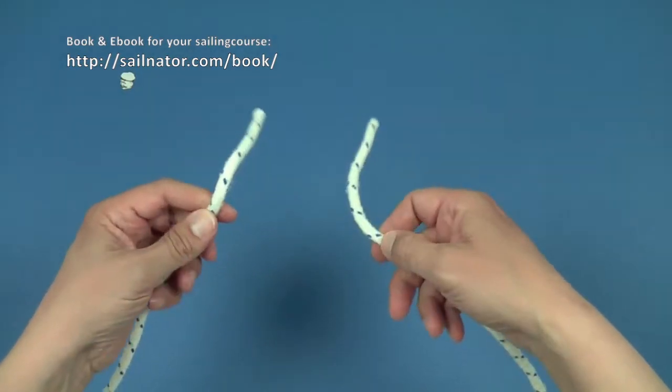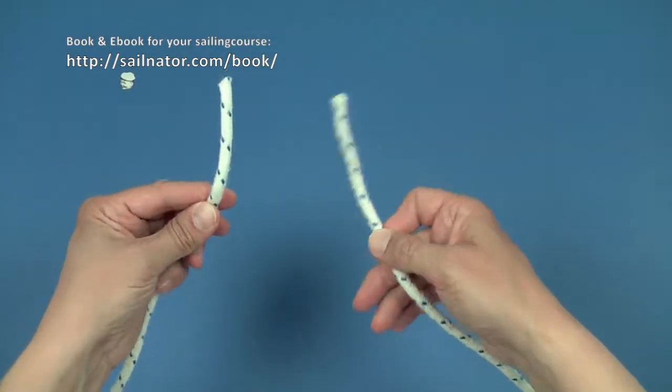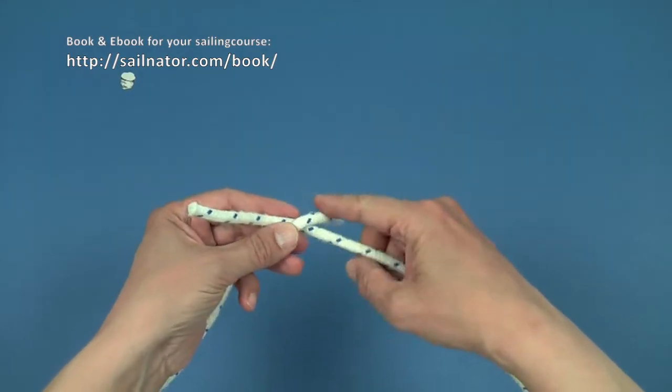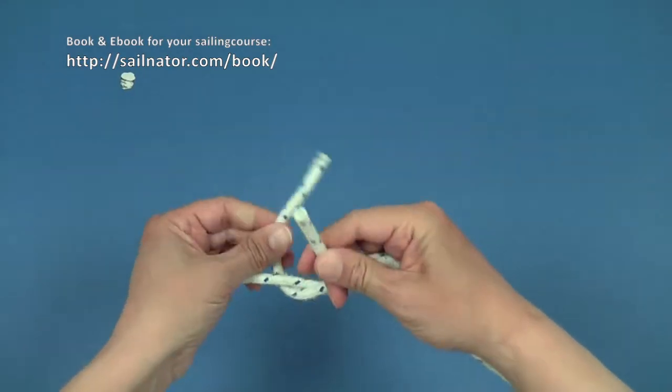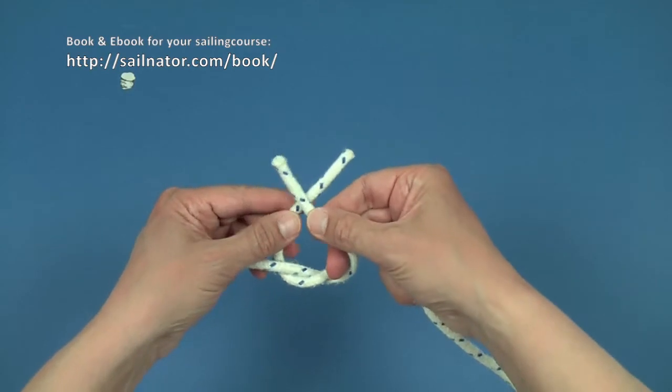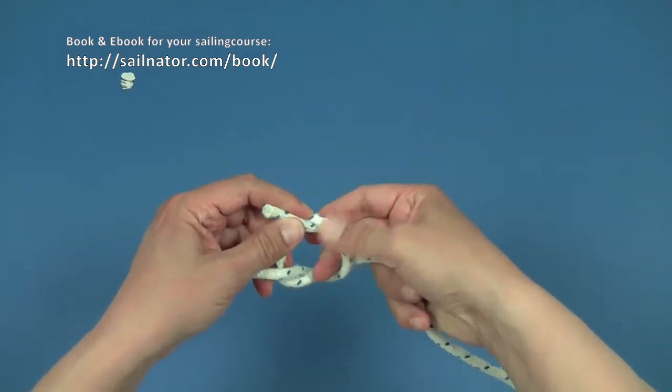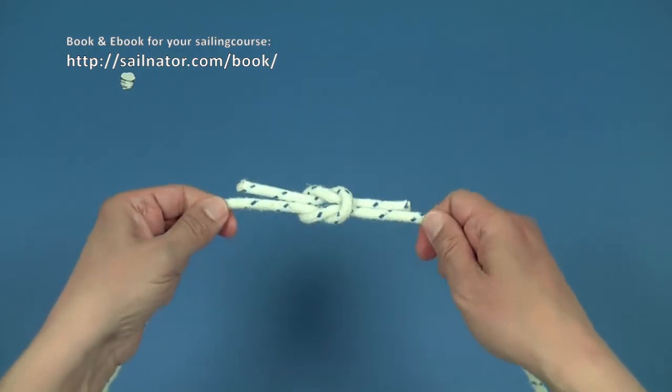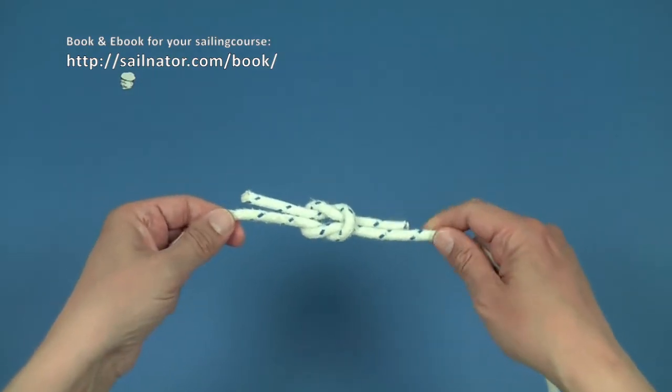I show how to tie the knot once again. I start in the same way as I would when tying a ribbon and remember which part was lying above. I put this part on the other one again and wrap both lines around each other. Now I pull on all four parts at the same time and the square knot is finished.